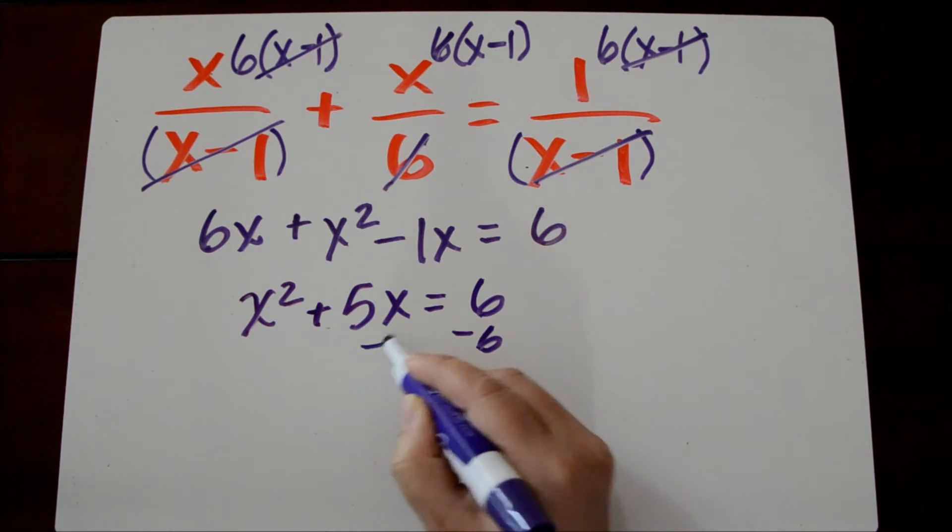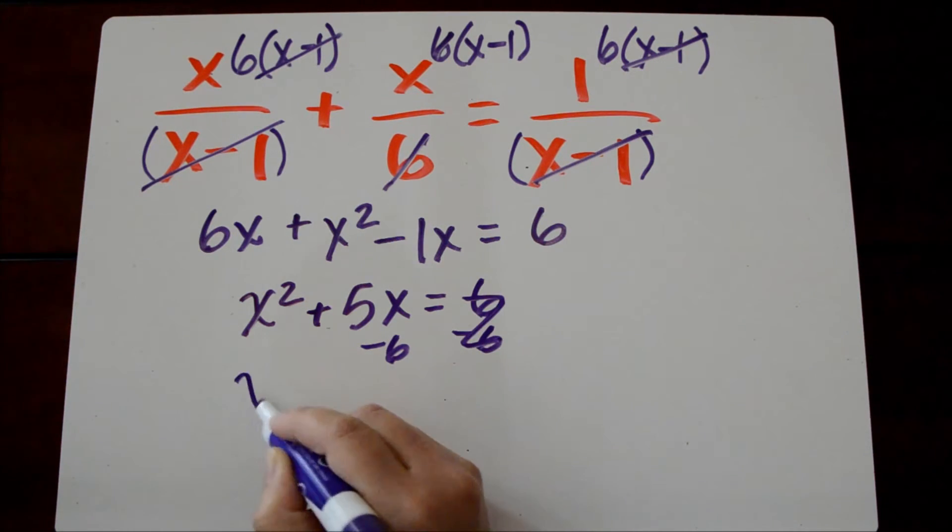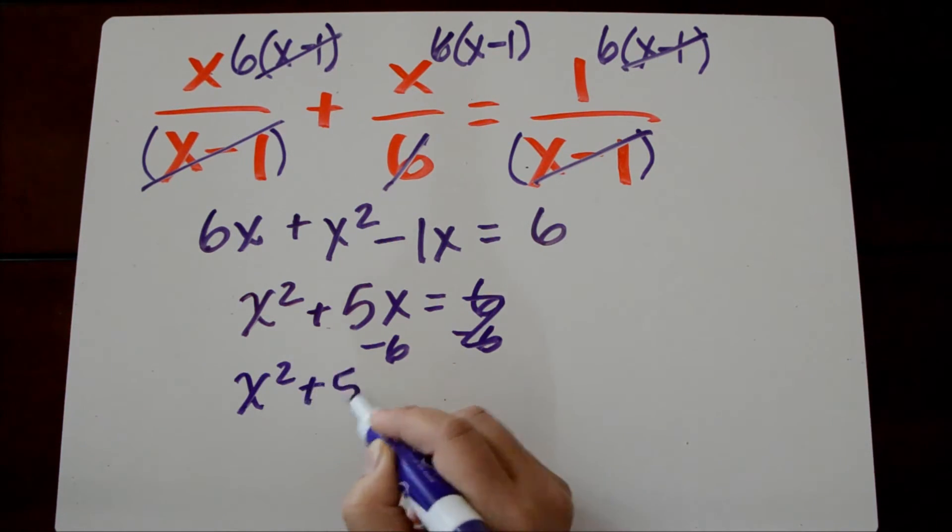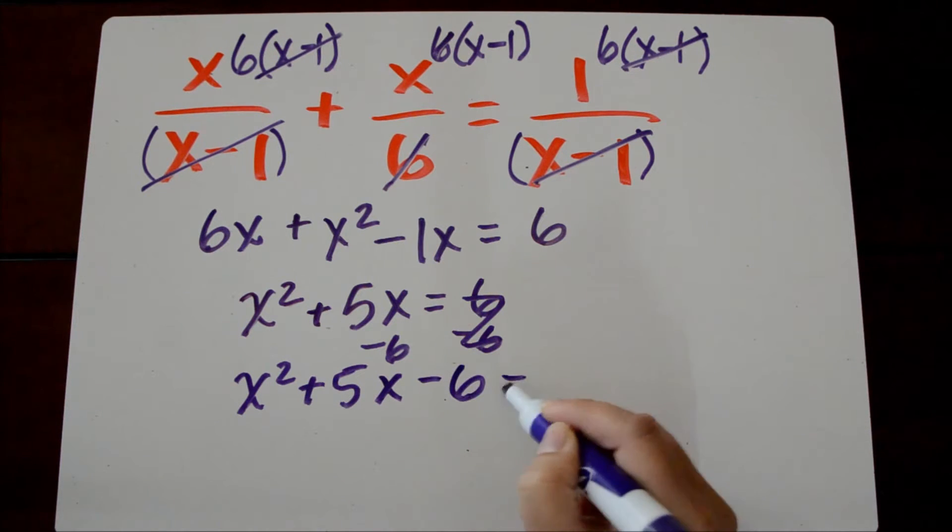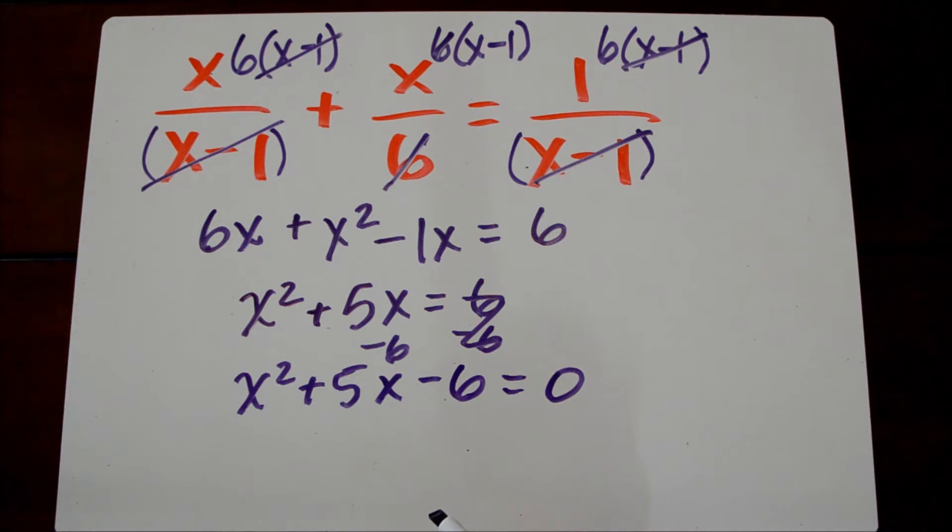And again, it's quadratic, so I want to set this equal to 0. I get x squared plus 5x minus 6 equals 0. And when I factor this, I get x plus 6 and x minus 1 equals 0.